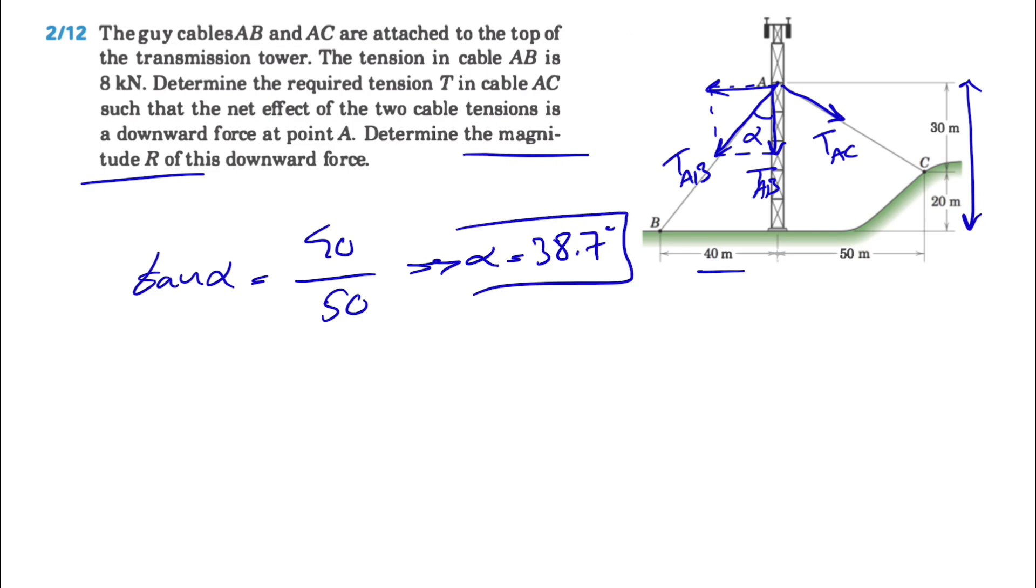If we call this angle here beta, the tangent of beta will be the opposite, which is 30, divided by the adjacent, which is 50. From here our beta will be 31 degrees.